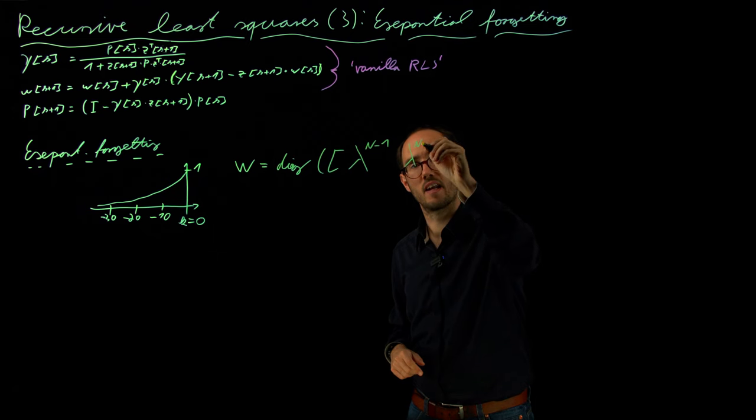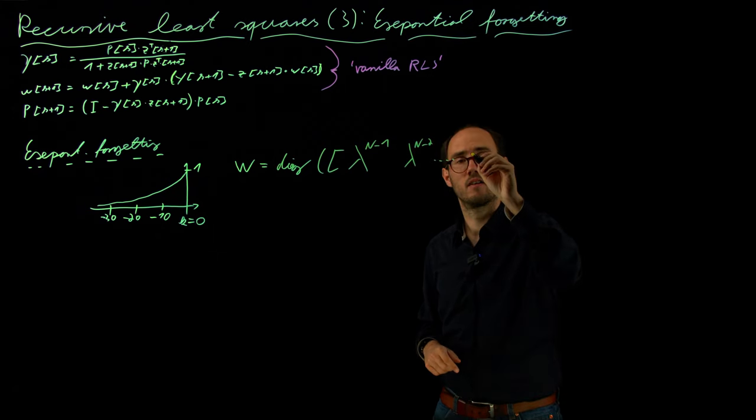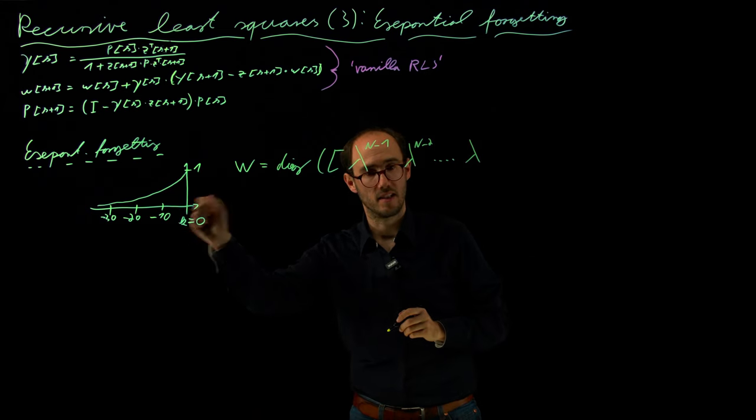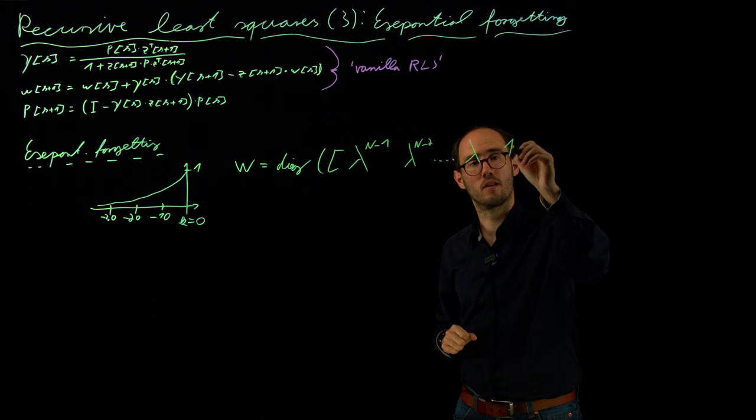lambda n minus 2, and so on to lambda, which would be the first data point in the history, and one that would be basically our recent data point.